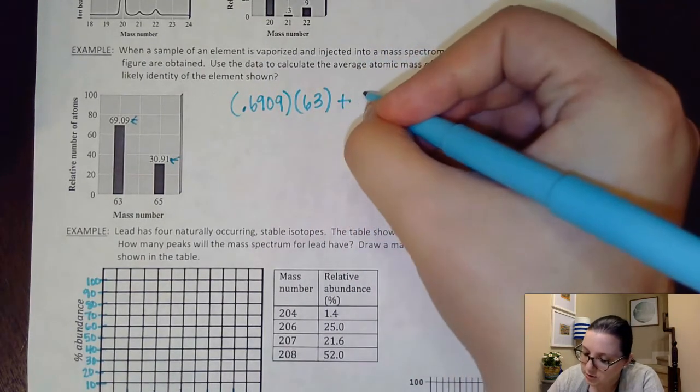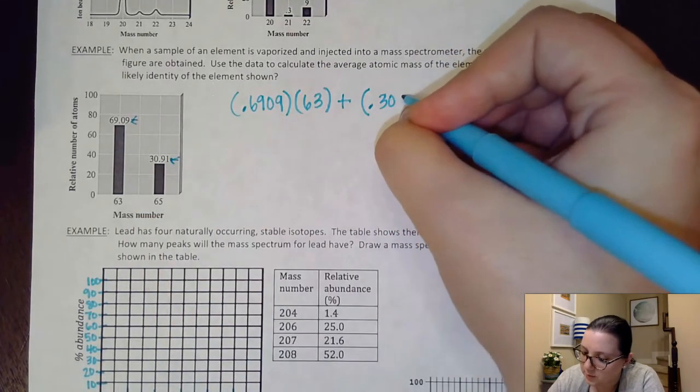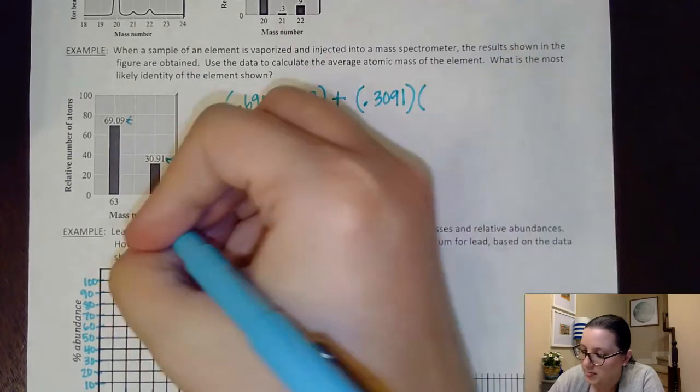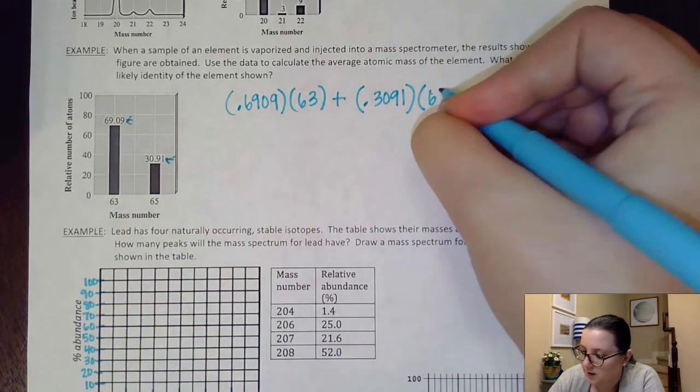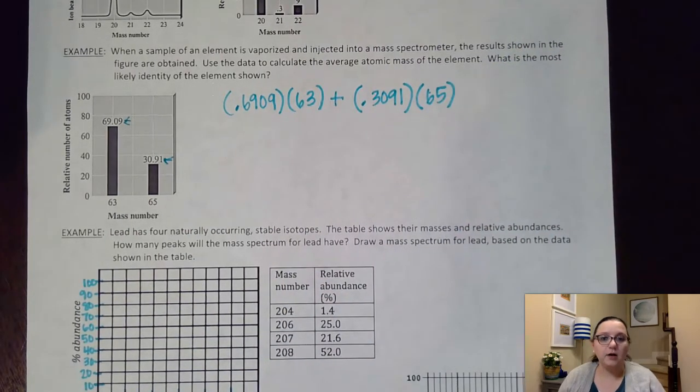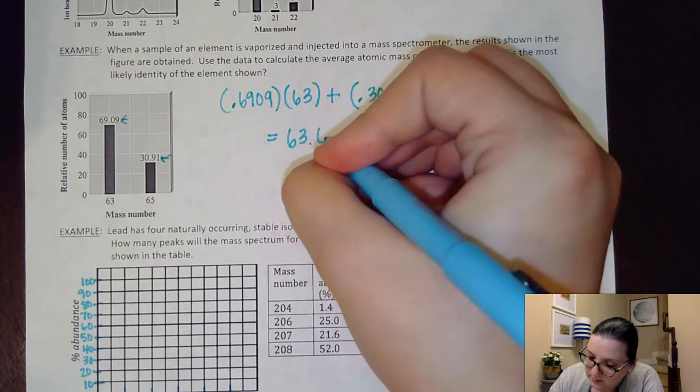I'm going to use that since they didn't give me an exact mass. I'm going to add that to my 0.3091, again, that 30.91% converted into a fraction, multiplied by the mass number of 65. And I would continue to do that for however many isotopes I have. Here, I only have the two, so I only had to do it for the two. By the way, this gets an answer of 63.62.